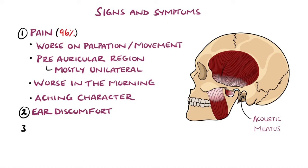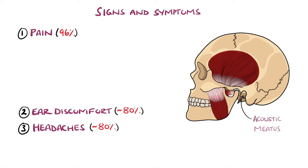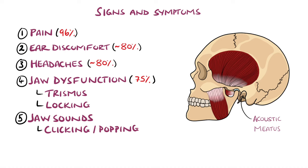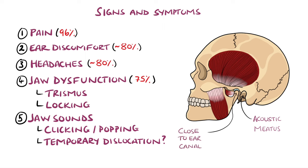Ear discomfort and headaches are present in around 80% of cases. Another main feature is jaw discomfort or dysfunction, seen in around 75% of cases. This can include trismus, which is a limited range of movement in the mandible, making eating and talking difficult. Alongside this, patients often complain of the jaw locking. Clicking or popping noises are another feature, which can come from temporary dislocation of the articular disc and its subsequent return to normal position.